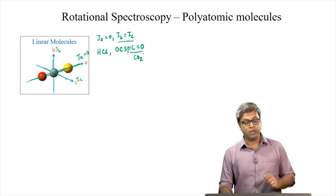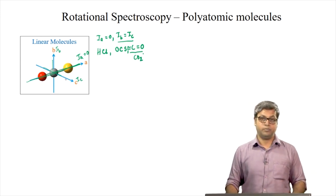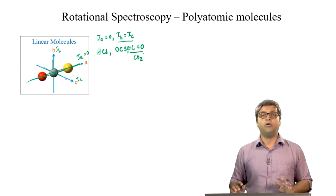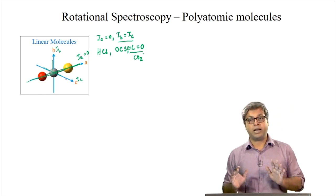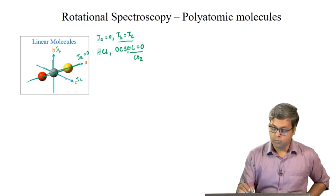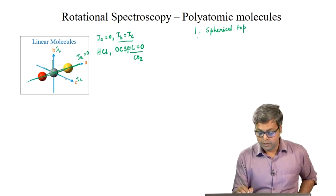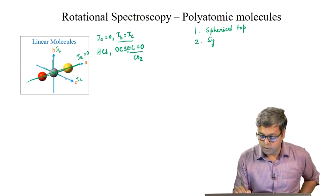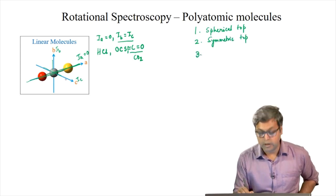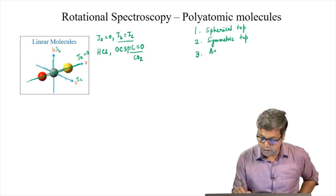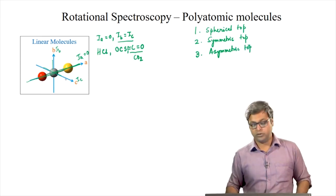In general, any molecule can be classified into three top or rotor categories: spherical top or spherical rotor, symmetric top or symmetric rotor, and asymmetric top or asymmetric rotor. We will look into these categories one by one.